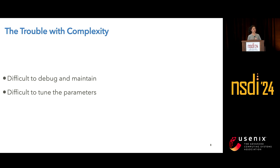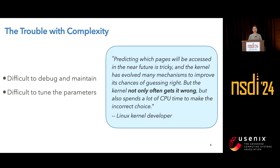Complex algorithms are usually difficult to debug and maintain. Many complex eviction algorithms also involve a lot of parameters to be tuned. Having a surprising result is not uncommon, based on our large-scale evaluations on web workloads. Therefore, most of the algorithms I have shown before are not adopted in production systems. As one Linux kernel developer said: predicting which pages will be accessed in the near future is tricky, and the kernel has evolved many mechanisms to improve its chances to guess things right. But the kernel not only often guesses wrong, but also spends a lot of CPU time to make the incorrect choice.